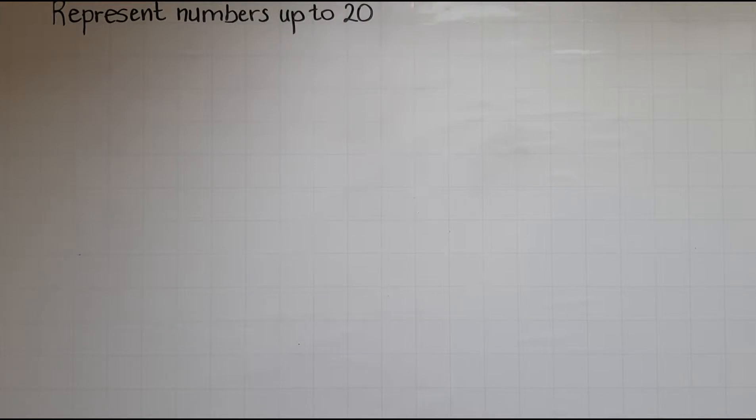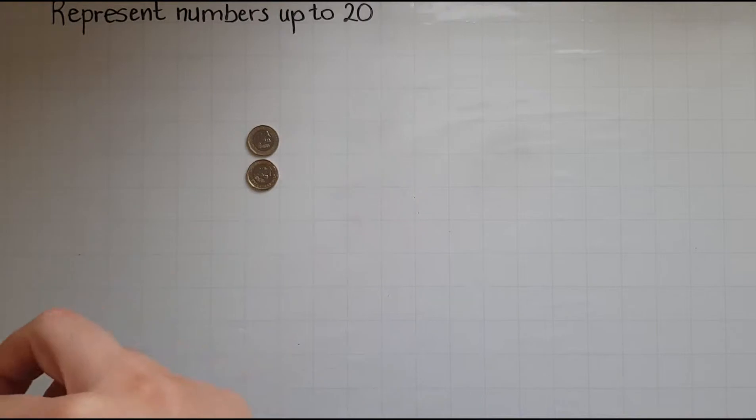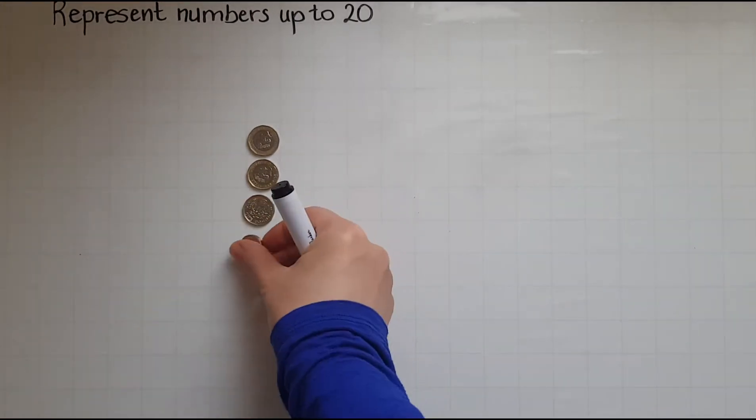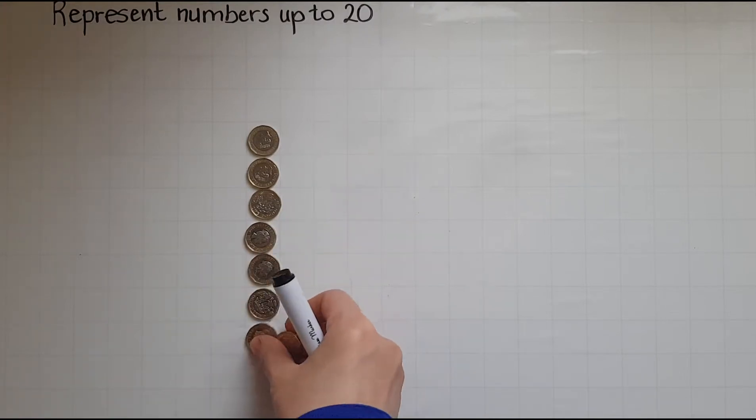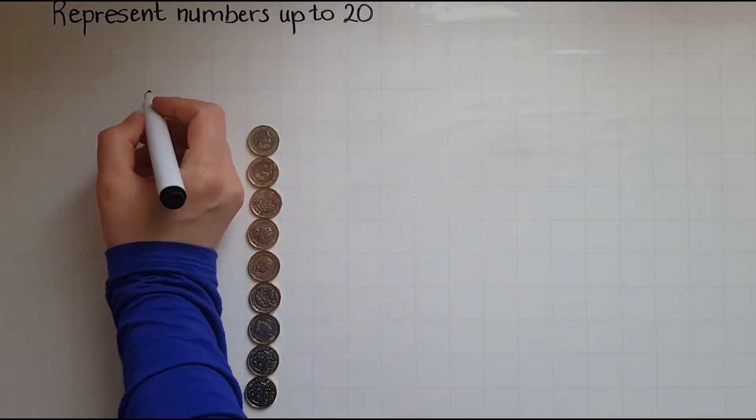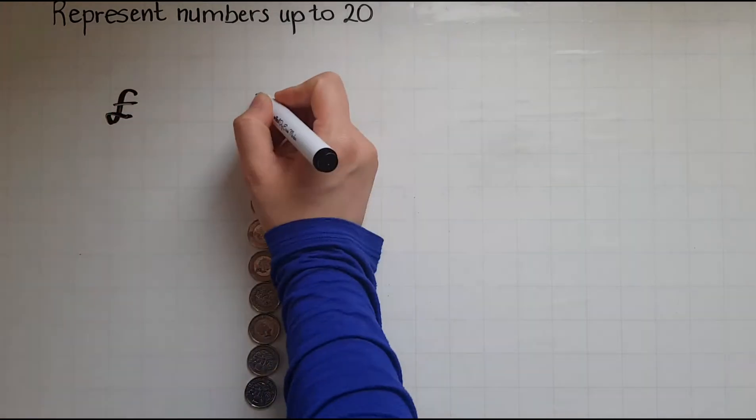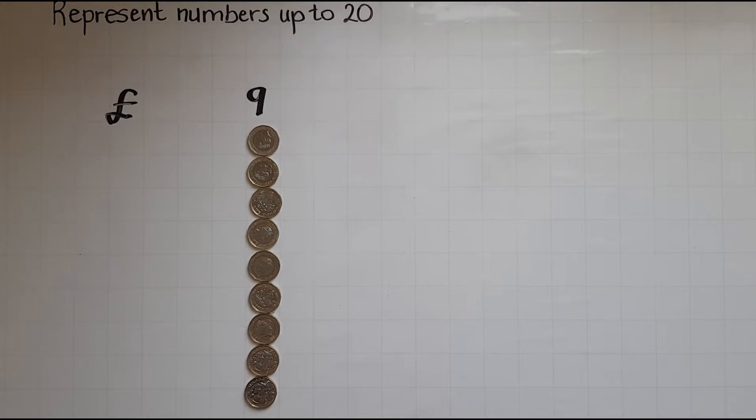I have nine pounds. Three, four, five, six, seven, eight, nine. How do I write that amount? So I'll write the pound sign in front, nine. So I have nine pounds.